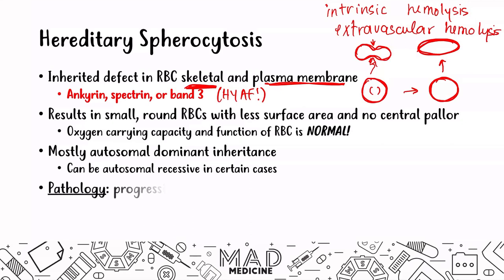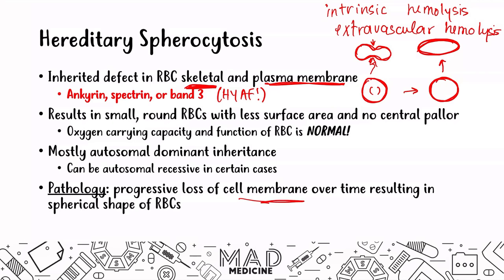The pathology is basically the fact that you're going to have progressive loss of your cell membrane over time. Because you are progressively losing your cell membrane due to these defective proteins, you're going to have a spherical shape of your red blood cell. Your body is going to take care of these red blood cells in your spleen — this is an extravascular hemolysis occurring in the spleen. When spherical red blood cells go through the cords of Bilroth in the red pulp, they're not able to deform, they get caught up, and the splenic macrophages lyse and destroy them. That is why you don't see intravascular hemolysis in hereditary spherocytosis.